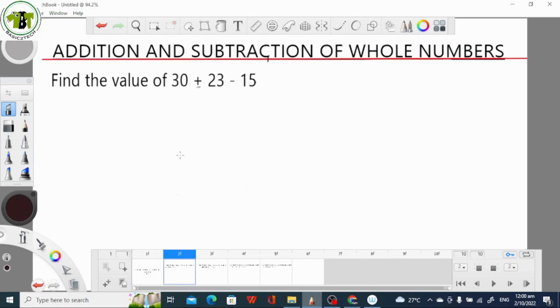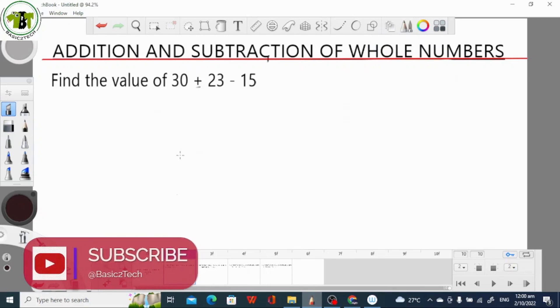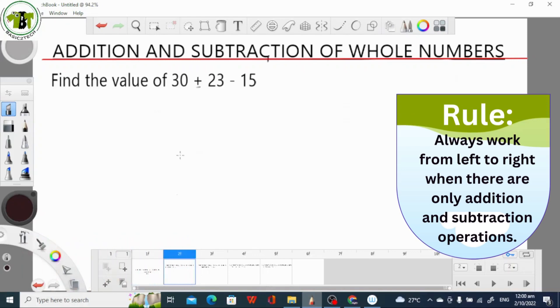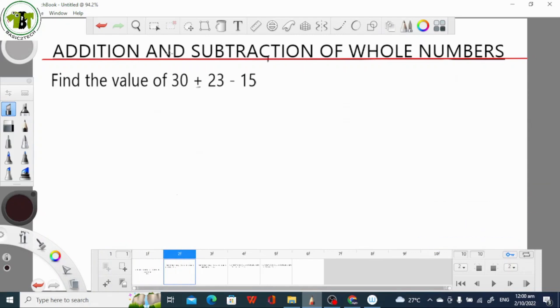Our first example is the addition and subtraction of whole numbers. The rule is to always work from left to right when there are just addition and subtraction operations. In this case, we are asked to find the value of 30 plus 23 minus 15. We work from left to right.